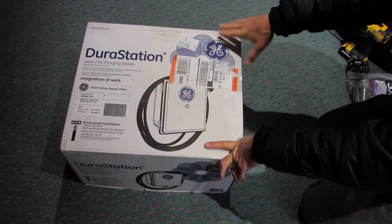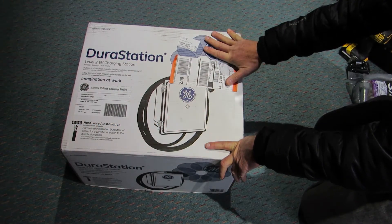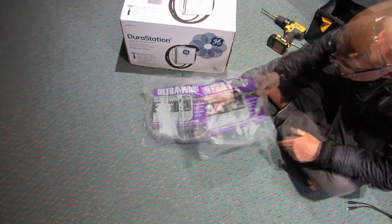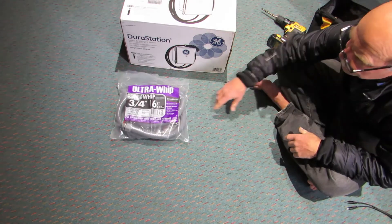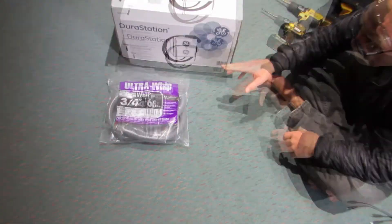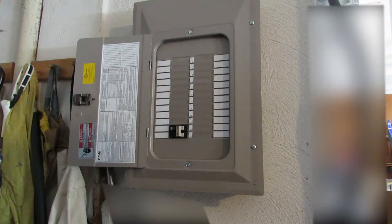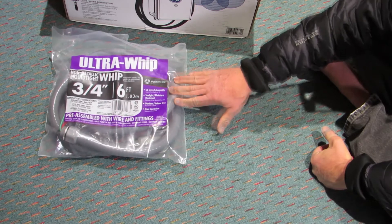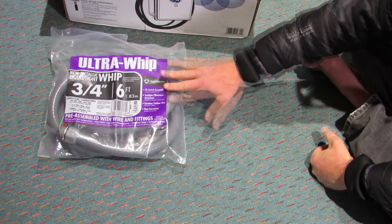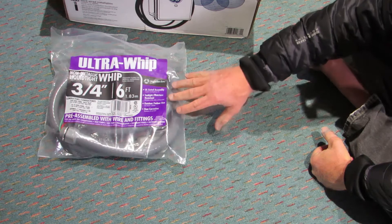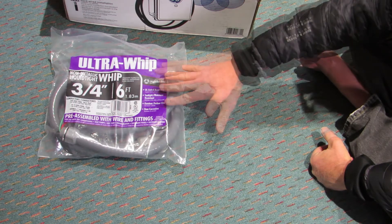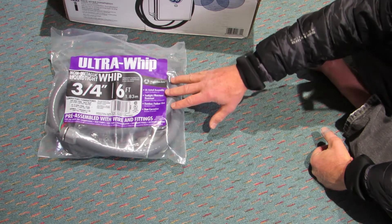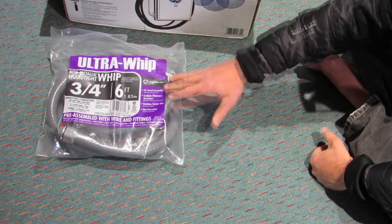What we need for this installation is the charging station itself from GE, $400 from Home Depot. In addition to the charging station, we need to have a way to connect it to the electrical service. In this case, we have a sub-panel in the garage, so we don't need much conduit to go from the circuit panel to the charging station. We've bought a 6-foot piece of conduit that's come pre-wired with 8-gauge wire. This is a $16 item at Lowe's. The 8-gauge wire is so that we can draw up to 40 amps out of the circuit panel to the charging station.